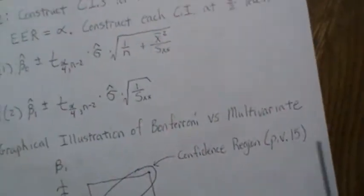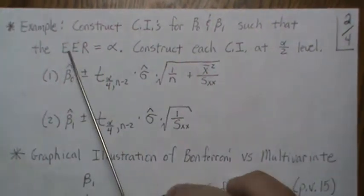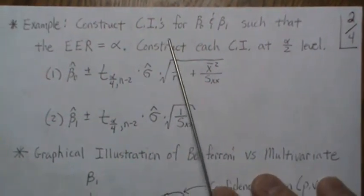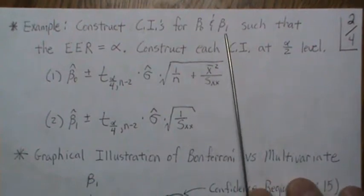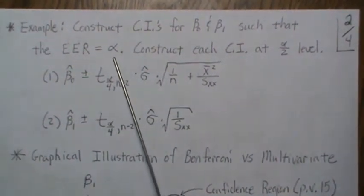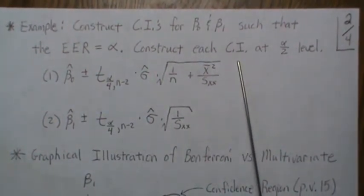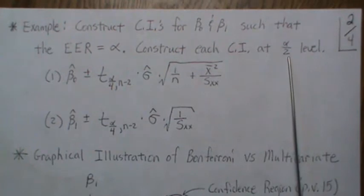Right now we're in the simple linear regression setting. So to construct confidence intervals for beta 0 and beta 1 such that the experiment-wise error rate is alpha, we need to conduct each individual confidence interval at the alpha over 2 level.